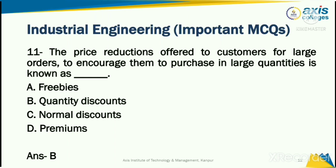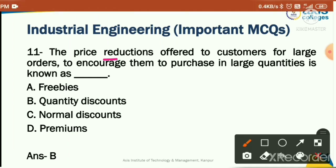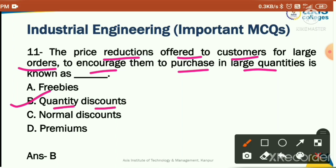The price reduction offered to customers for large orders to encourage them to purchase in large quantities is known as: freebies, quantity discounts, normal discount, or premiums. The answer is quantity discounts — a discount based on quantity purchased. For example, if you buy six products, a slight variation in price is given as a discount.